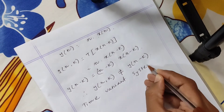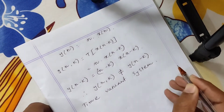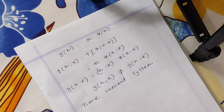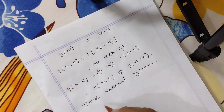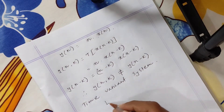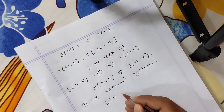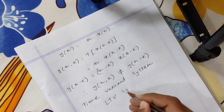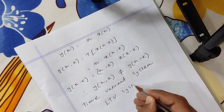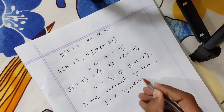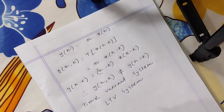After checking, we confirm this is a linear system and a time-variant system. So we conclude that this system is an LTV system — linear time variant system.